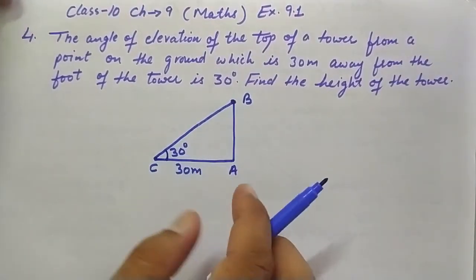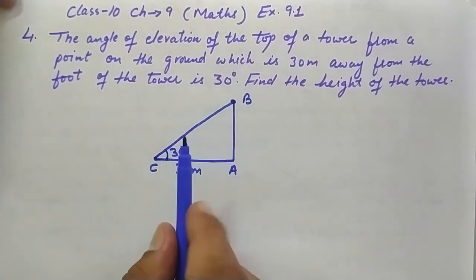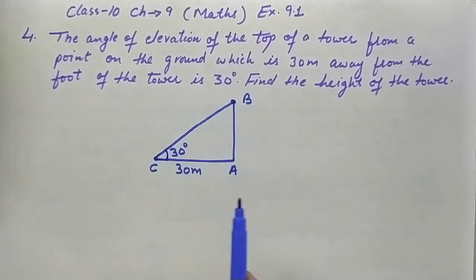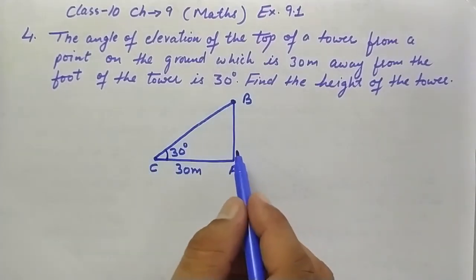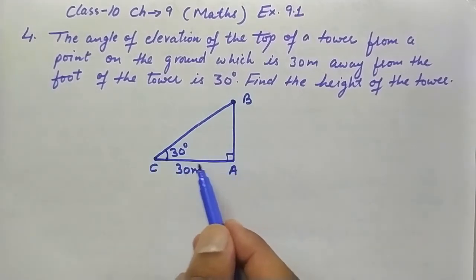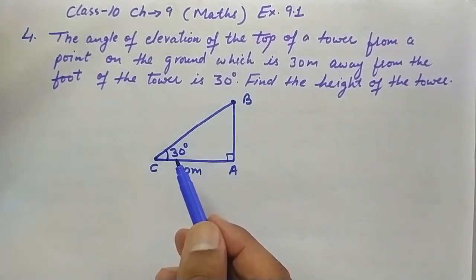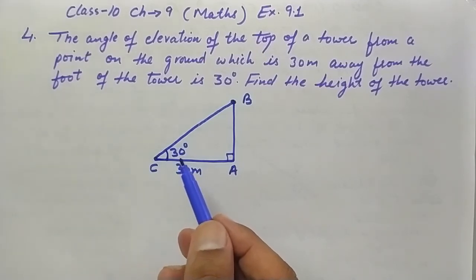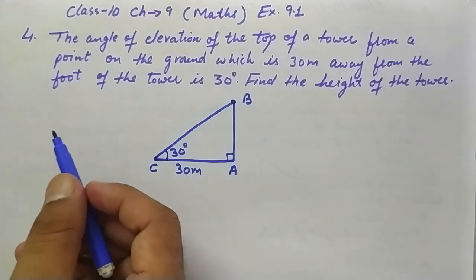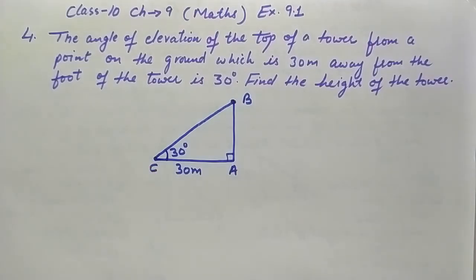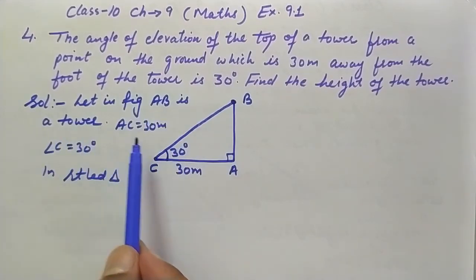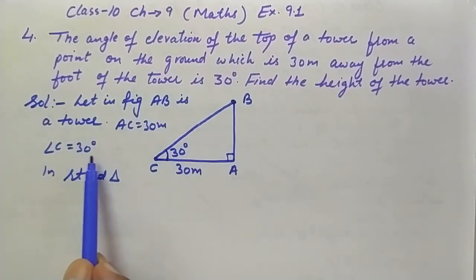AC is 30 meters and AB is the tower — we need to find the height of the tower. In a right-angle triangle, if one side and one acute angle are given, we can find the other sides using trigonometric ratios. Let's set up the figure: AB is the tower, AC is 30 meters, and angle C is 30 degrees.